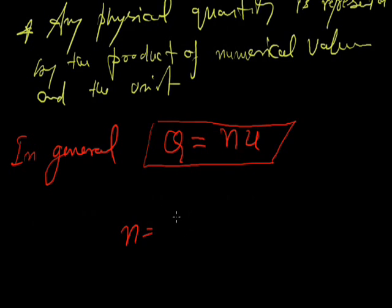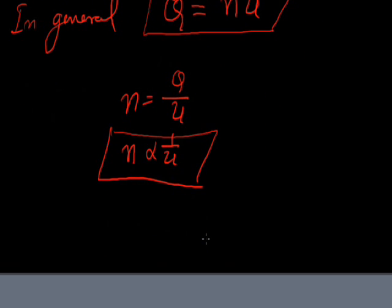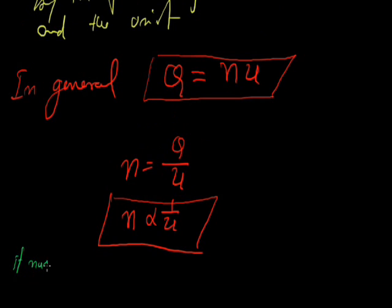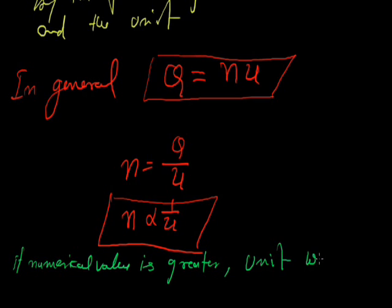u is constant. So we can say n is equal to Q by u, and n is proportional to 1 by u. It shows that if numerical value is greater, unit will be less.